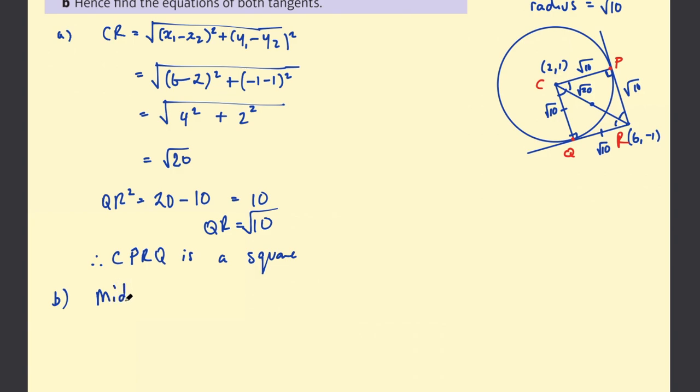So let's say midpoint of CR. That's easy enough using the midpoint formula. That's (x₁+x₂)/2 and (y₁+y₂)/2, just the average of the two points. So (2+6)/2 and (1+(-1))/2. Let's write that out but we know it's going to be 0 right?